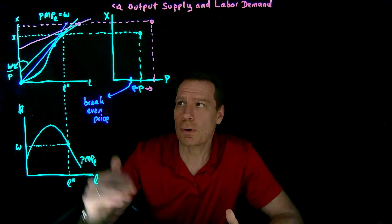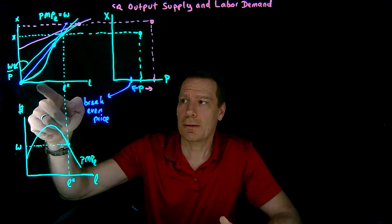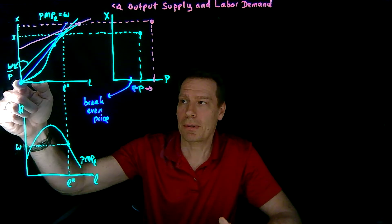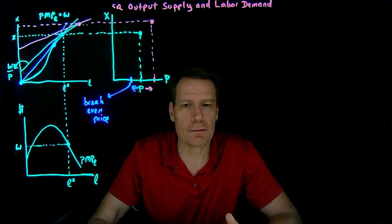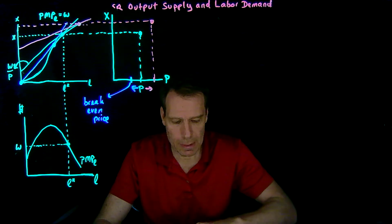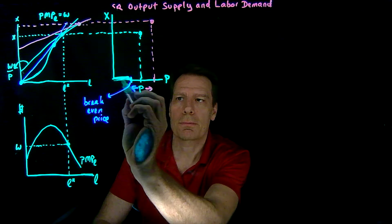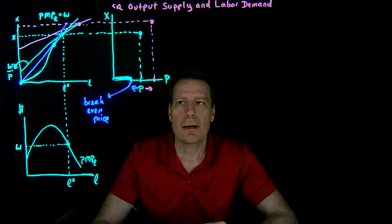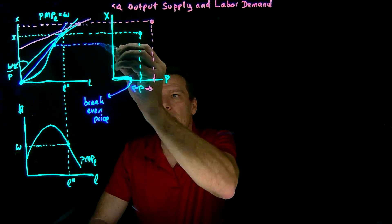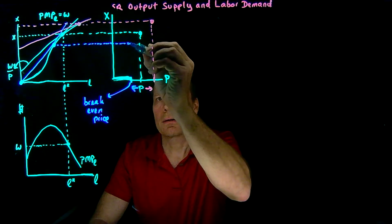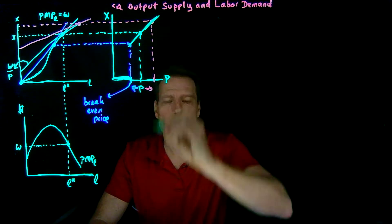If the price fell any more, the slope of the profit line would become even steeper. A tangency would happen, but the intersection with the intercept would happen at a negative quantity, which means the firm would be making a negative profit. Firms are not going to produce if they make negative profit. So if price falls below the break-even price, output is going to be zero. But once we get to the break-even price, we can maximize profit, figure out the optimal quantity, and trace out how much output we're going to supply for different prices.